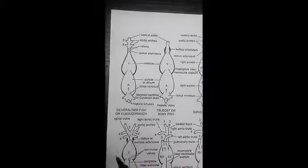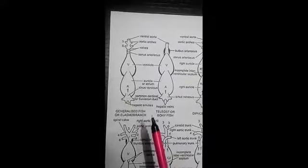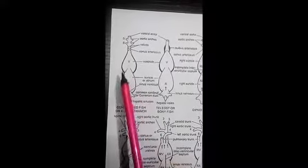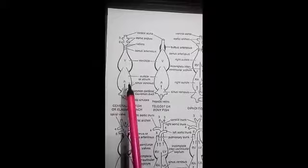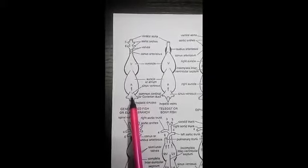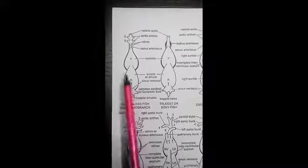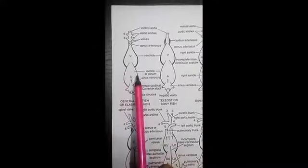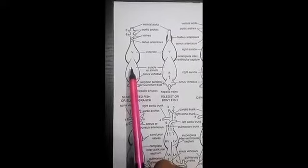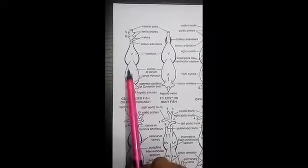The sinus venosus and conus arteriosus are accessory chambers. Atrium and ventricles are the true chambers. There is a sino-atrial aperture between sinus venosus and atrium, guarded by a pair of valves. Atrium lies dorsal to ventricle and opens ventrally into ventricle through an atrio-ventricular aperture guarded by a pair of valves.